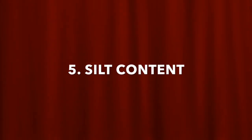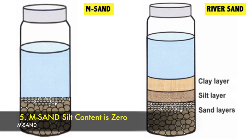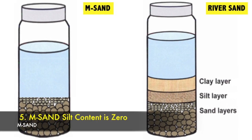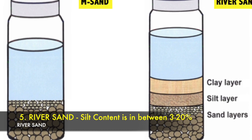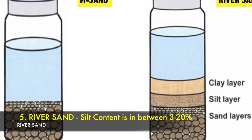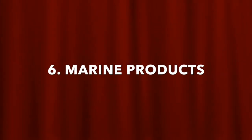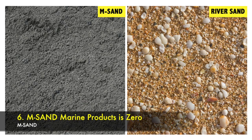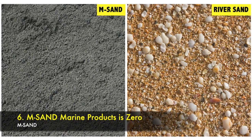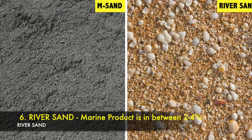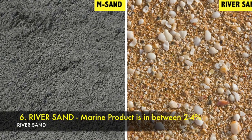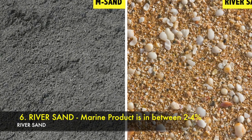Point 5 — M sand: Silt content is zero. River sand: Silt content is between 3–20%. Point 6 — M sand: Marine products content is zero. River sand: Marine products like shell etc. are between 2–4%.